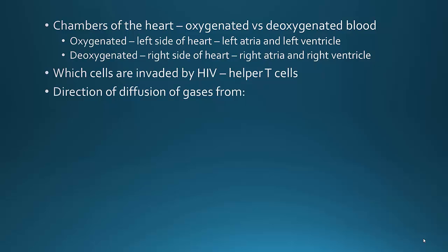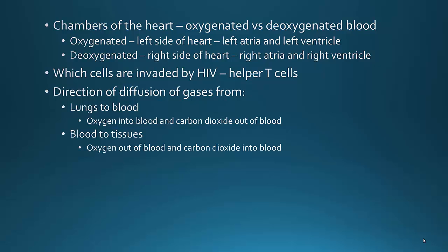You also need to know the direction of diffusion of gases. Lungs to blood: oxygen goes into the blood and carbon dioxide is out of the blood, allowing you to breathe out carbon dioxide. At the tissue level, oxygen leaves the blood to go to the tissues, and it picks up carbon dioxide to carry back to the lungs. Make sure you know how oxygen and carbon dioxide are moving, whether from the lungs to the blood or from the blood to tissue.